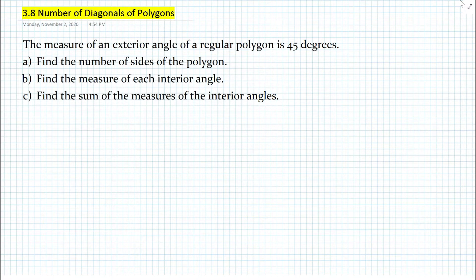The measure of an exterior angle of a regular polygon is 45 degrees. A: Find the number of sides of the polygon. B: Find the measure of each interior angle. And C: Find the sum of the measures of the interior angles.